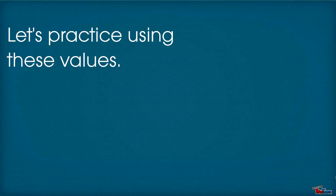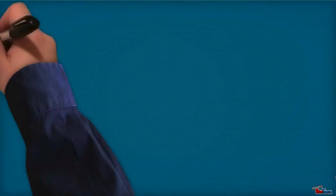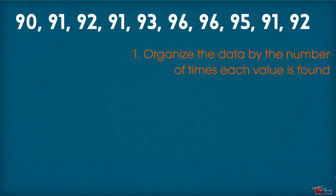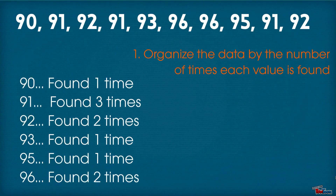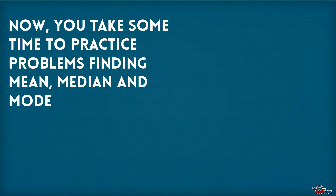Let's practice using these values. Organize the data by the number of times each value is found. Here we see that 91 occurs the most. Now you take some time to practice the problems finding mean, median, and mode.